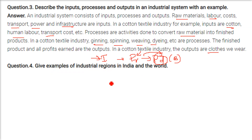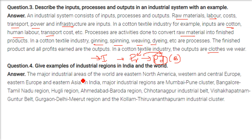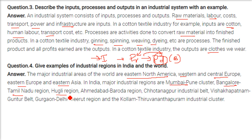Give examples of industrial regions in India and the world. The major industrial areas of the world are eastern and northern America, west and central Europe, eastern Europe, and eastern Asia. In India, major industrial regions include the Mumbai-Pune cluster, Bengaluru-Tamil Nadu region, Hoogli region, Ahmedabad-Baroda region, Chota Nagpur industrial belt, Visakhapatnam-Guntur belt, Gurgaon-Delhi-Meerut region, and Kollam-Thiruvananthapuram industrial cluster.